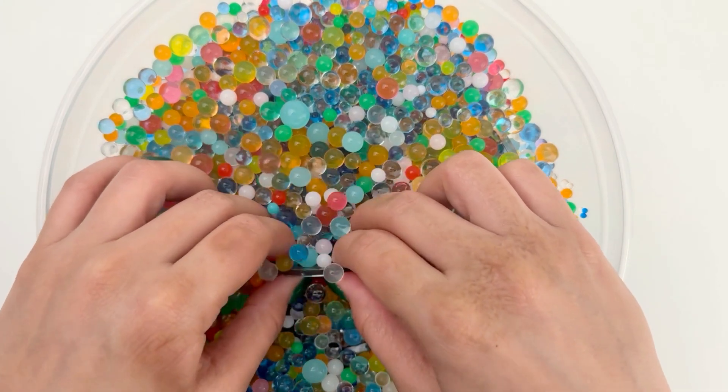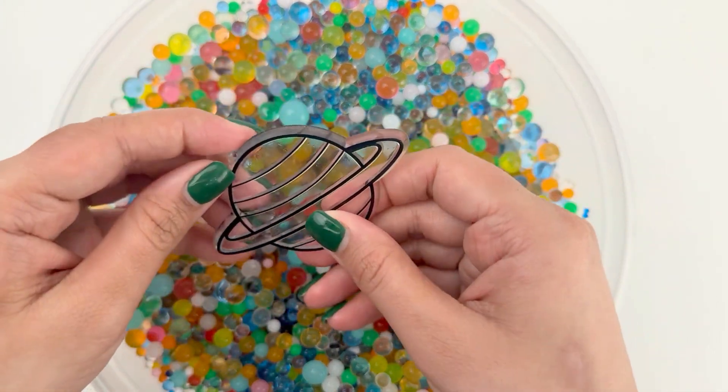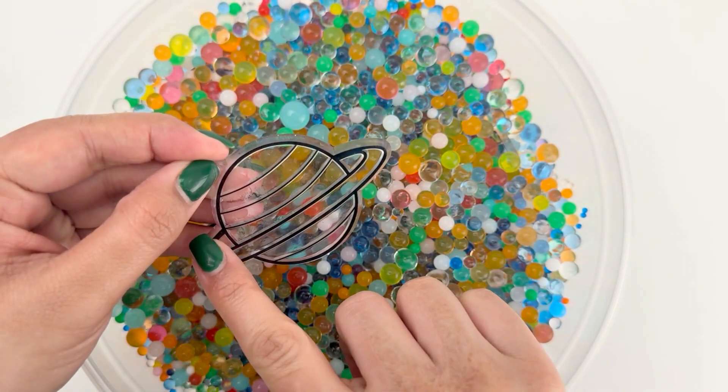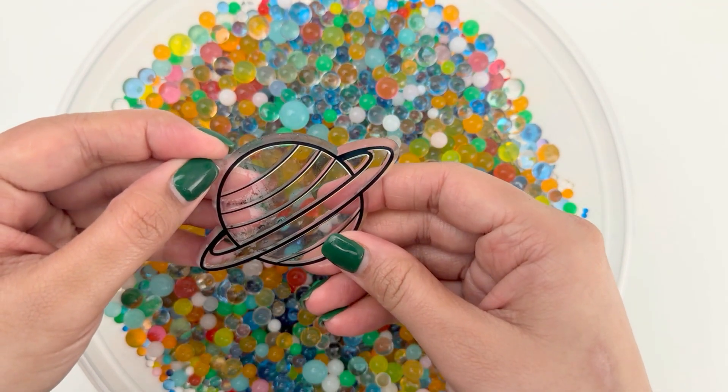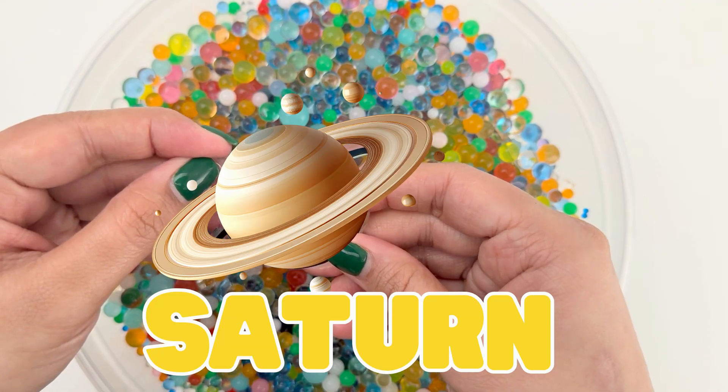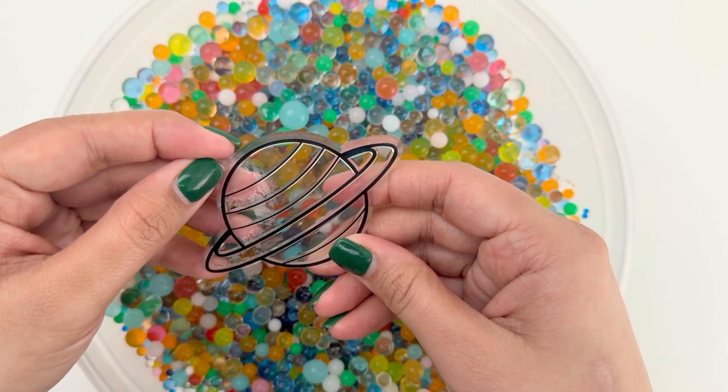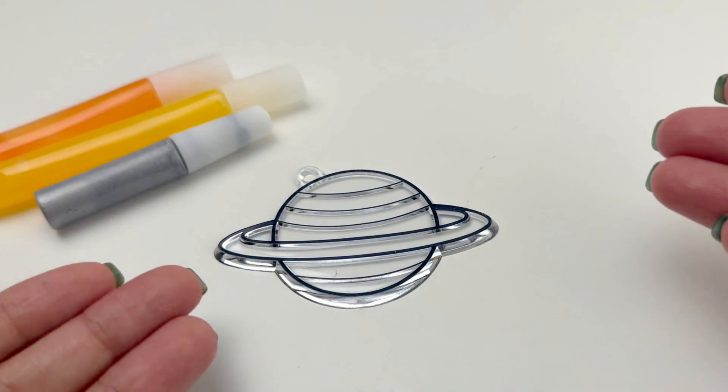Let's find our next planet. Oh, this planet has rings. It is Saturn. Let's color our Saturn.